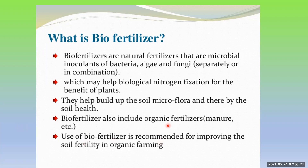Some of them also include organic fertilizers like manure, compost, vermicompost. All these things can be prepared by using cow dung, vegetable waste or plant waste. Use of biofertilizer is recommended for improving soil fertility in organic farming.